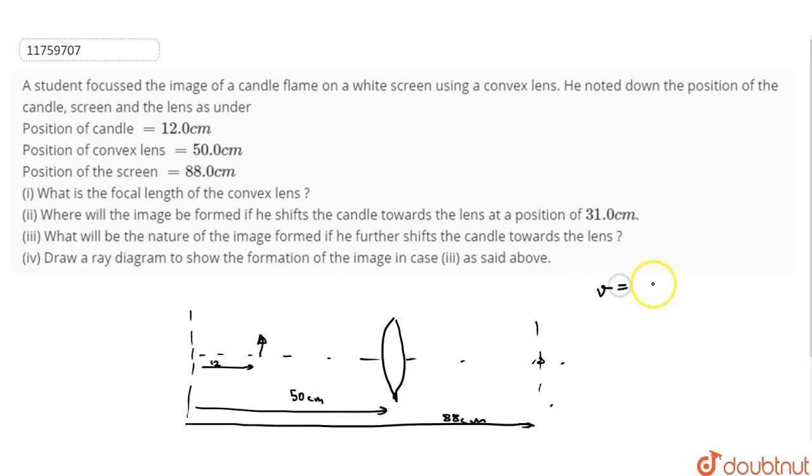First, we have to find V. That is 88 minus 50. So V is 38 cm. And U is 50 minus 12. So U is 38 cm. Now, U is left side. So in Cartesian system, U is minus 38 cm.